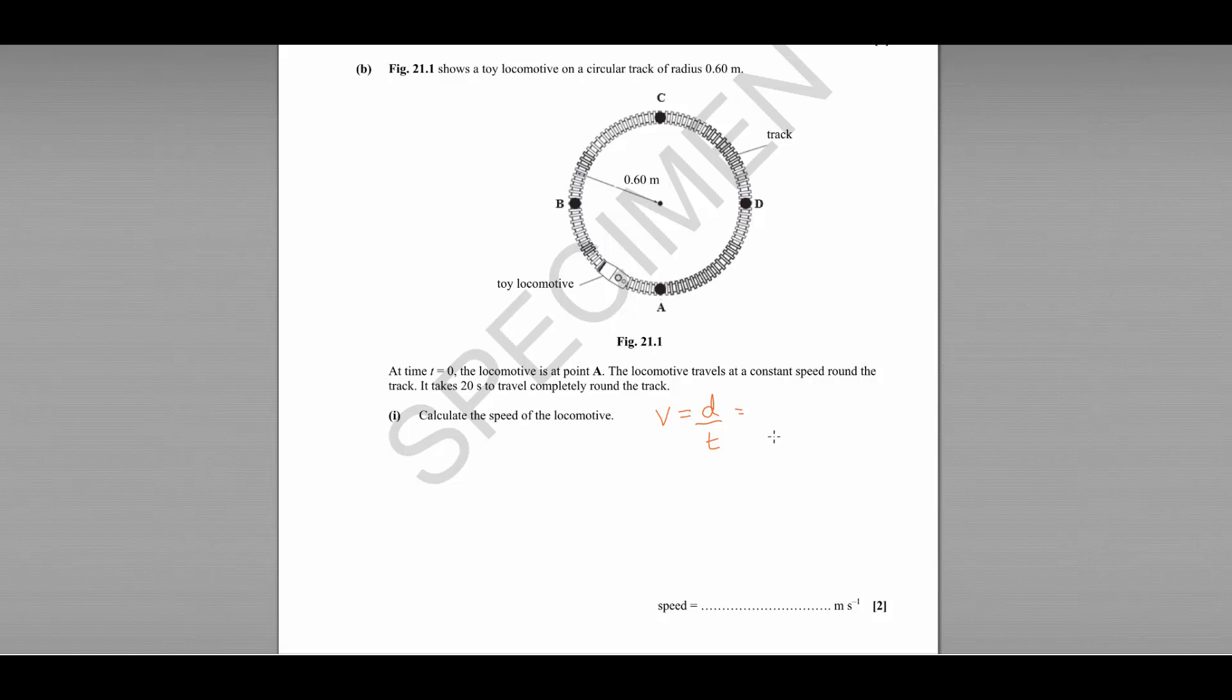We know that the distance here is the circumference of the circle, so that is 2π times the radius divided by the time. In this case, 2π times 0.6 divided by the time taken, which was 20 seconds, and that will give us 0.19 meters per second.